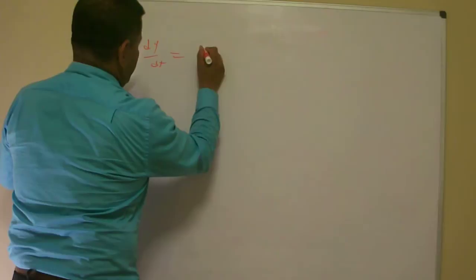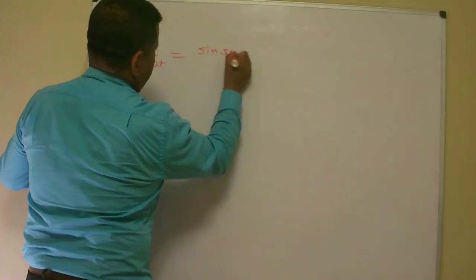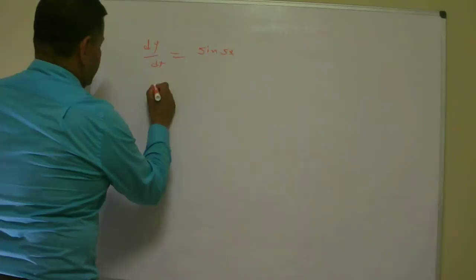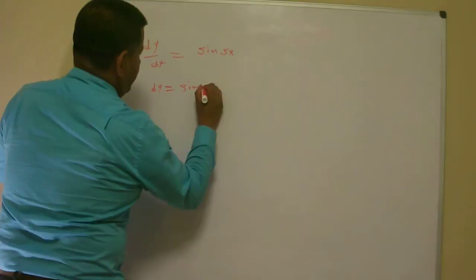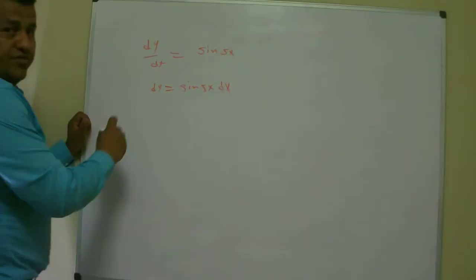That's number one in this book, which is dy over dx is equal to sine of 5x. Well, in this case, I can actually separate dy is equal to sine of 5x dx. So, I separate the variables already.